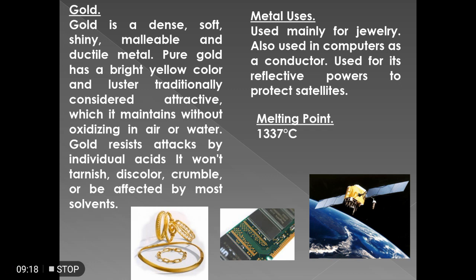Next is gold. Gold is a dense, soft, shiny, malleable, and ductile material. Pure gold has a bright yellow color and luster. Because of that, its application is highly in jewelry. It is also used in computers as a conductor, and its reflective power is used to protect satellites. The melting point of gold is 1337 degrees Celsius.